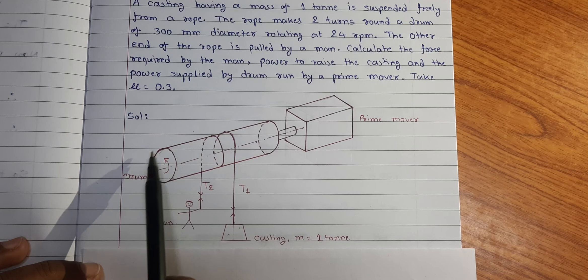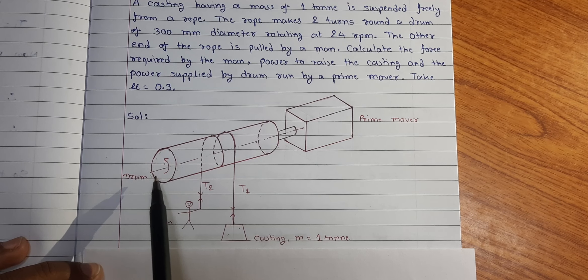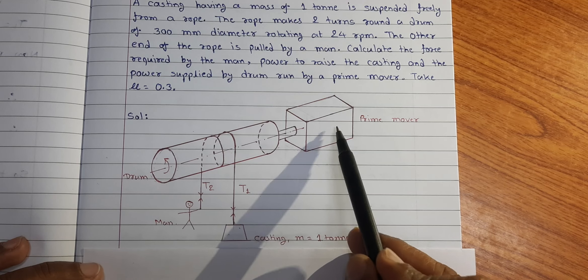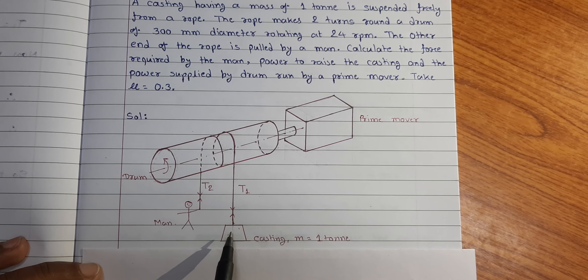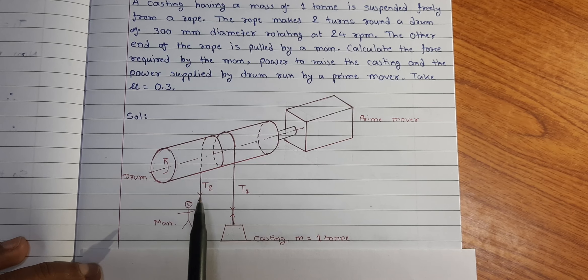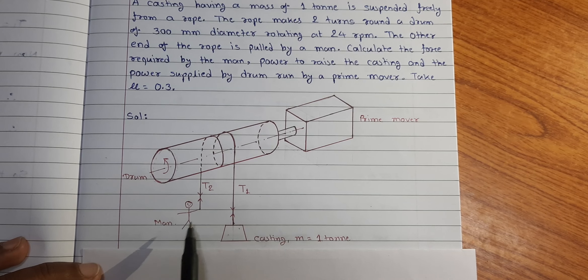Here a drum is given which rotates to raise this casting by a prime mover. However, the rope makes 2 rounds around the drum and another end is pulled by a man.